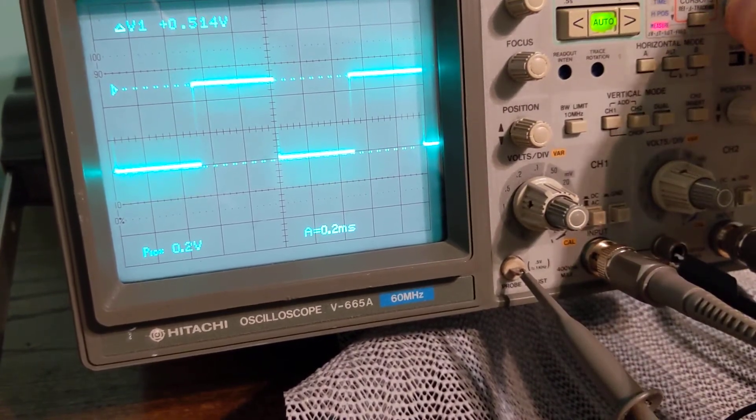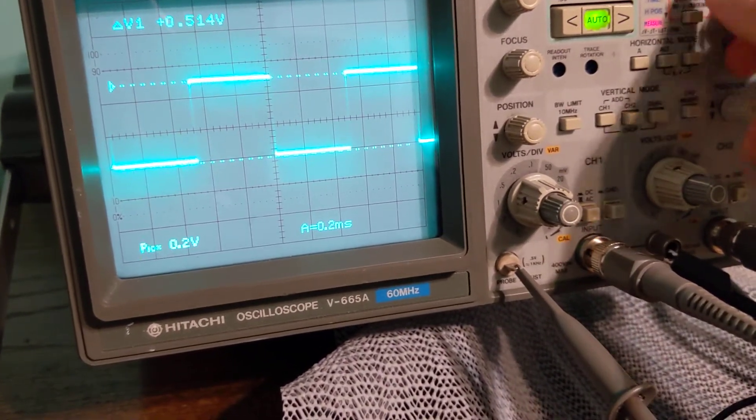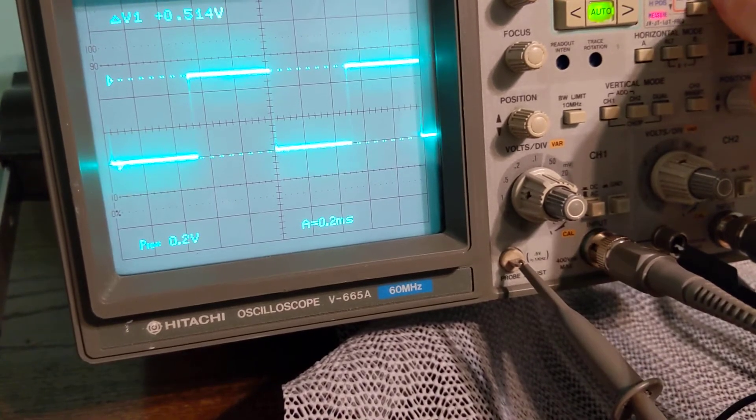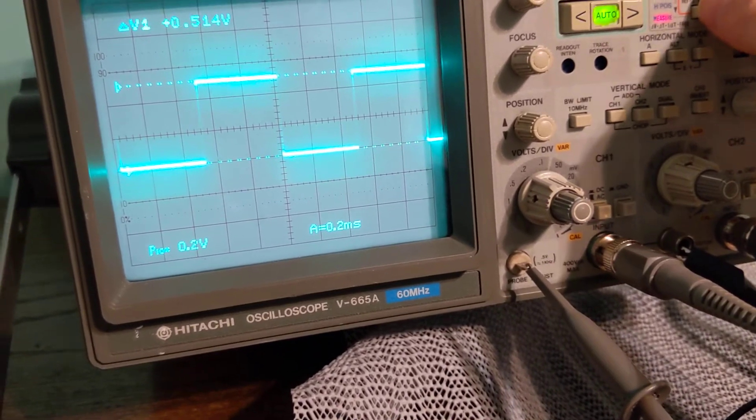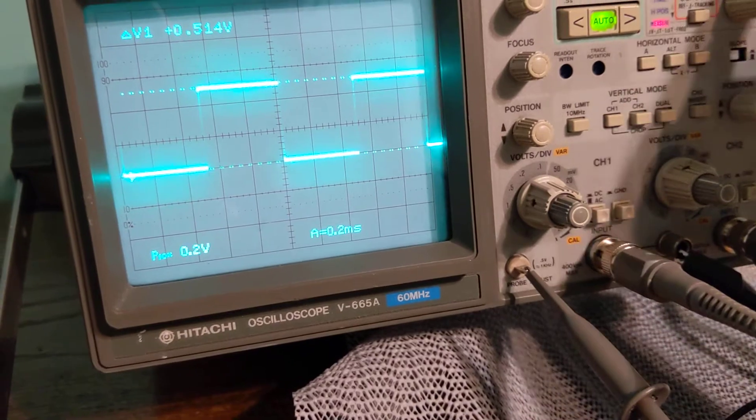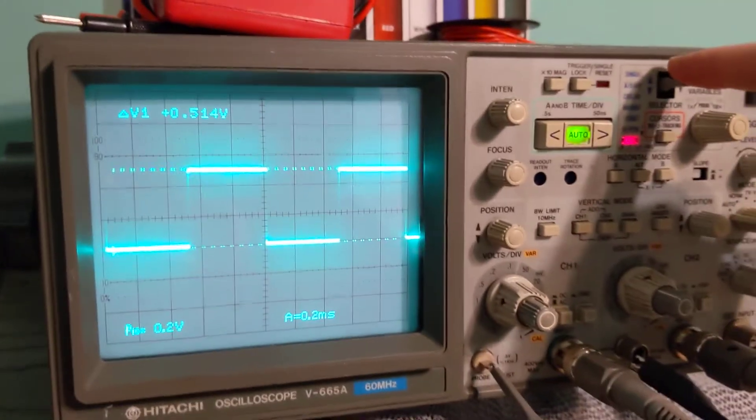It probably is five volts. The lower one looks a little off if I move it in. Okay, so I got the five volts part. So now I want to do the frequency measurement.